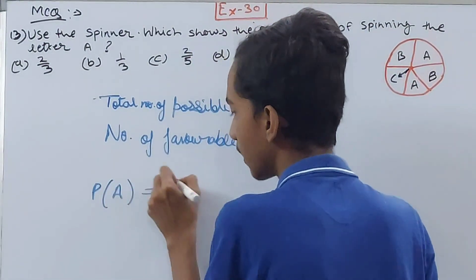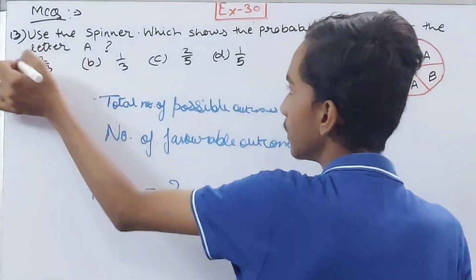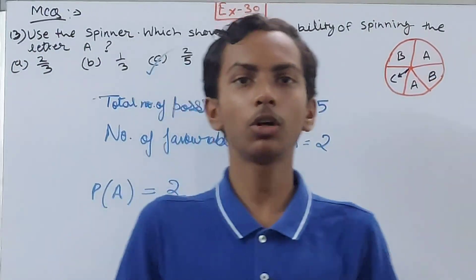So probability of getting an A will become what? Two by five. Very simple. Option C is correct. And friends, this is all for today.